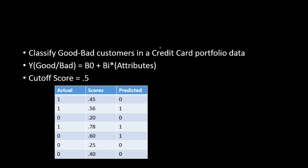Confusion matrix is useful when you are building a classification model. Classification models are used when you want to classify your data into different categories. For example, in a credit card portfolio you have good and bad credit card customers, and you want to build a predictive model which classifies your customers or new customers into either a good or bad category.